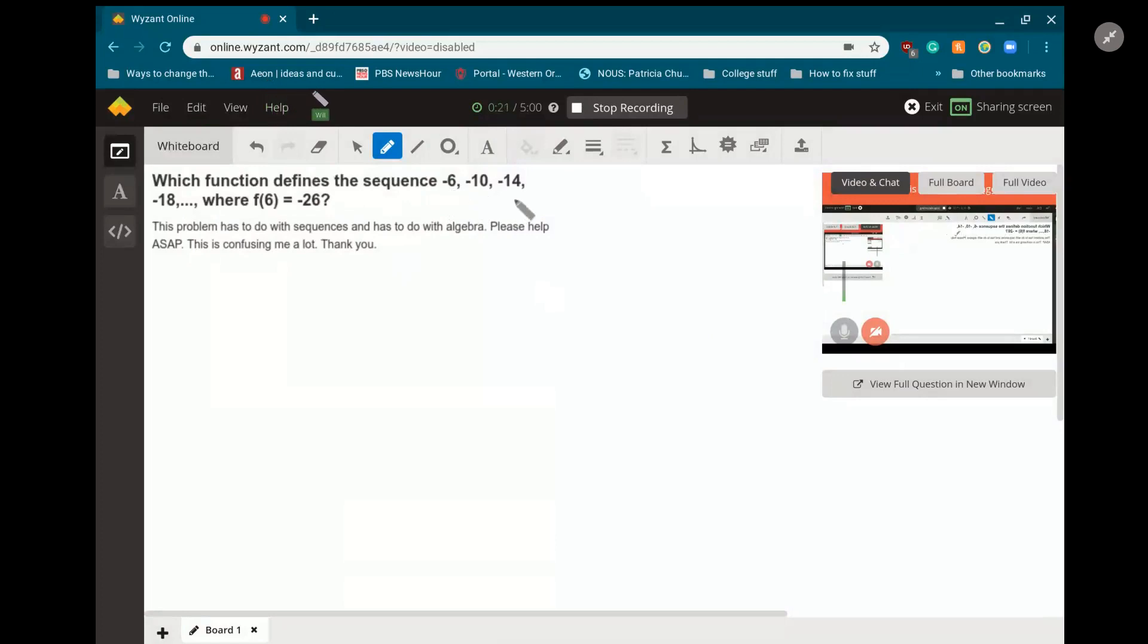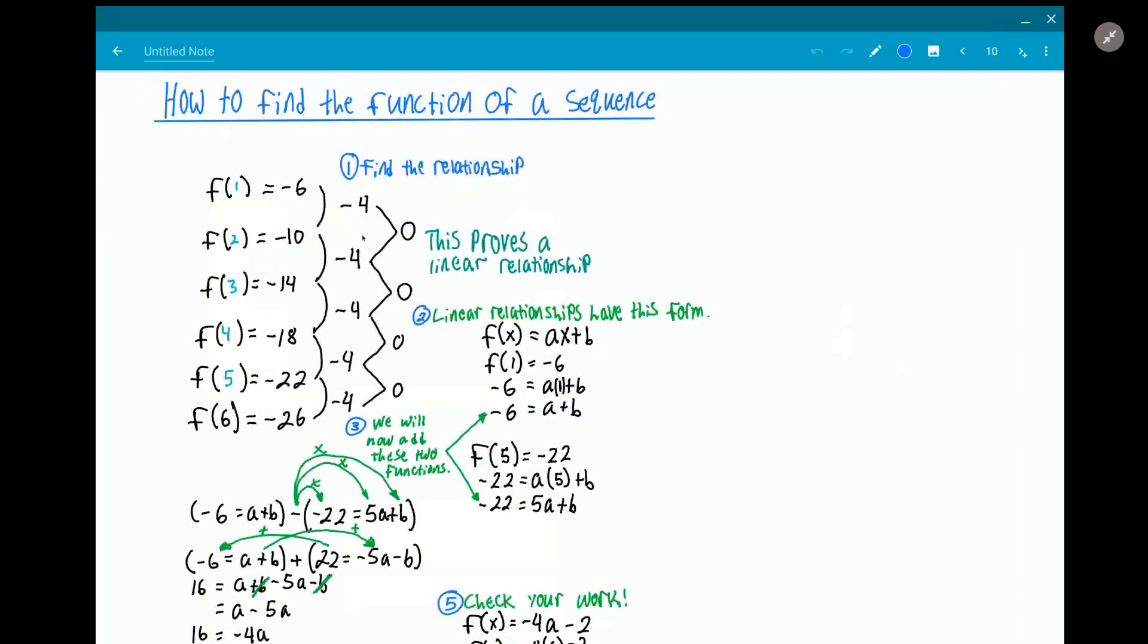So if we expand this a little bit: -6, -10, -14, -18, -22, and then -26. So we have our series there, we have our sequence. Now I'm going to show you how I solve this problem. First I found the relationship - you can see that every one of these is subtracted by four.